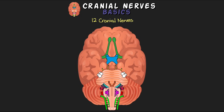The first nerve is cranial nerve one, the olfactory nerve, shown here in green. This is the first of only two nerves that actually originate from the cerebrum. It is a sensory neuron responsible for olfaction — what we commonly know as the sense of smell.